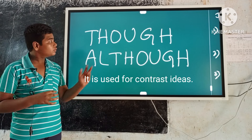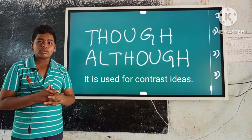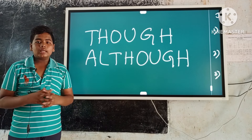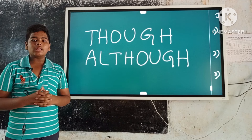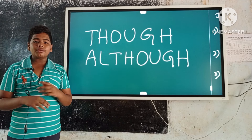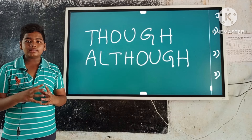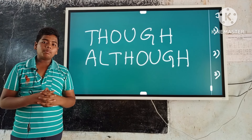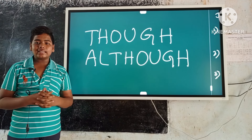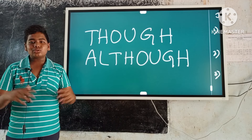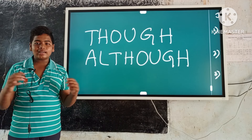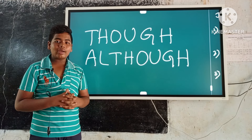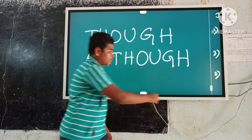How to join sentences using though or although? First, keep though or although before the first occurring sentence. Keep a comma before the second sentence. So the answer is ready. Now, examples.